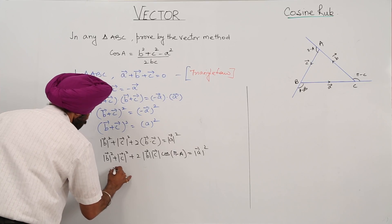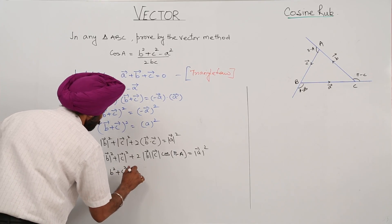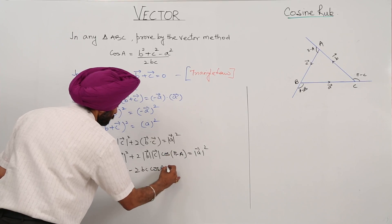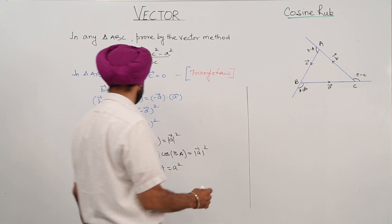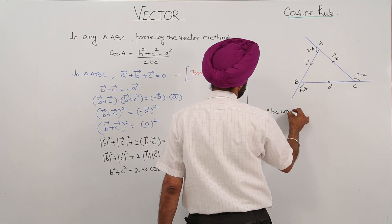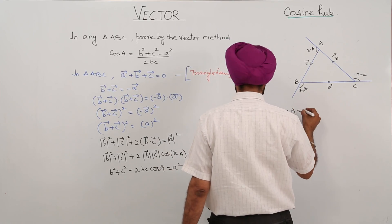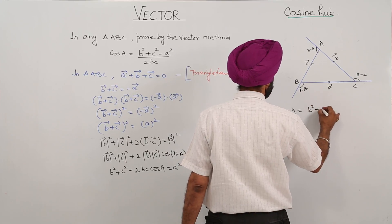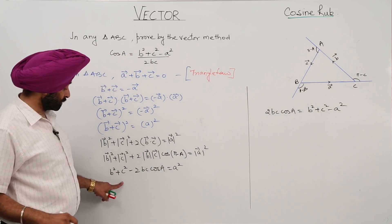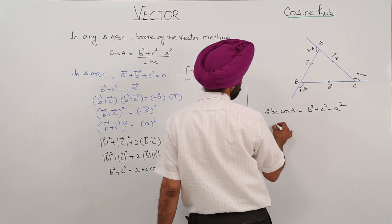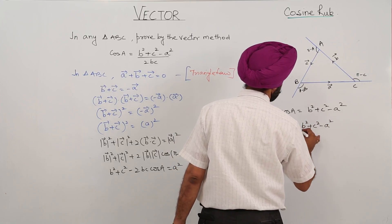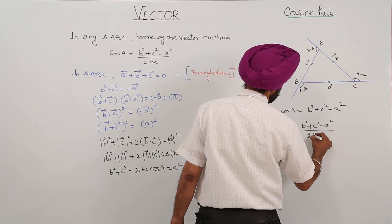This becomes b square plus c square minus 2bc cos A is equal to a square. Rearranging: 2bc cos A is equal to b square plus c square minus a square. Therefore cos A is equal to b square plus c square minus a square upon 2bc.